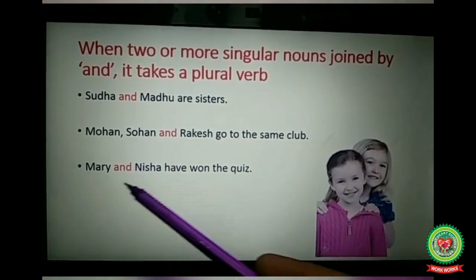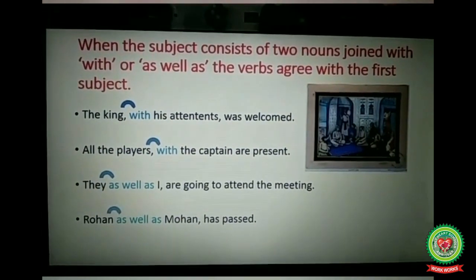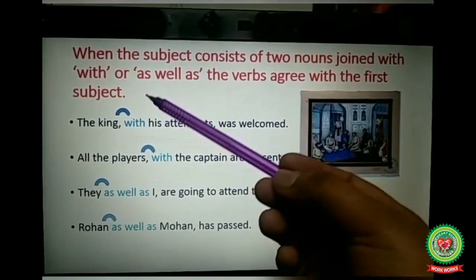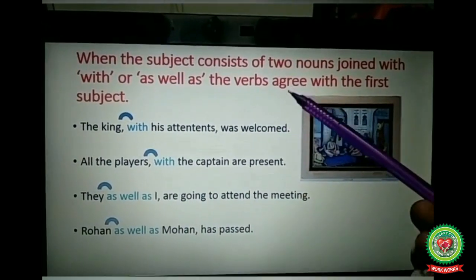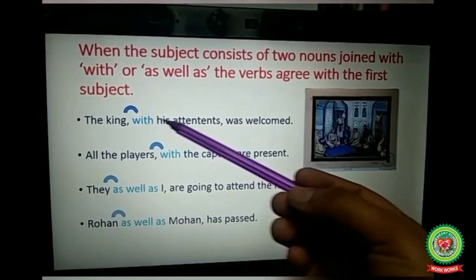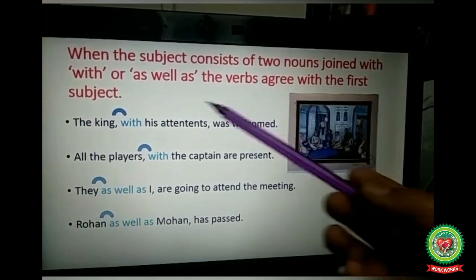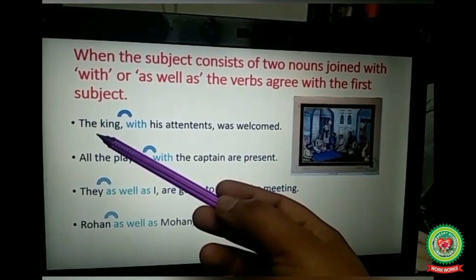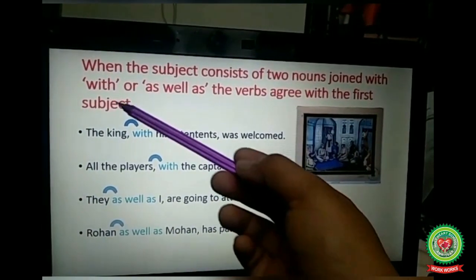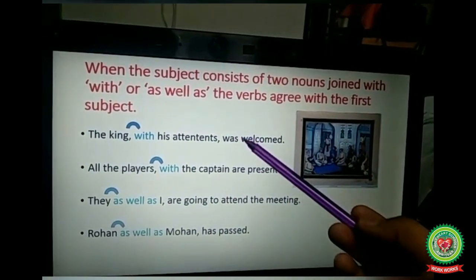When the subject consists of two nouns joined by 'with' or 'as well as,' the verb agrees with the first subject. For example: 'The king with his attendants was welcome' — we have two subjects, the king and his attendants, but they are joined with 'with.' So we check the first subject — the king — which is singular, and we take the singular verb 'was.'